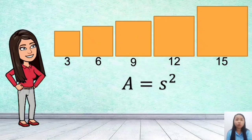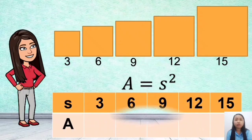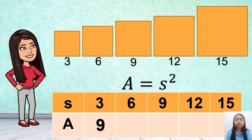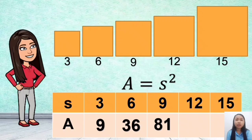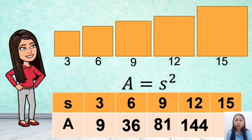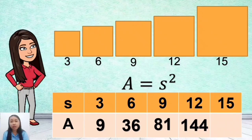Using this table, we are going to find the area of each tile. If the side is 3, the area is 9. If the side is 6, the area is 36. If the side is 9, the area is 81. If the side is 12, the area is 144. And if the side is 15, the area of the largest tile is 225.